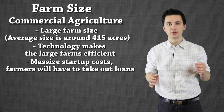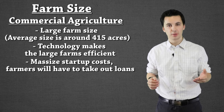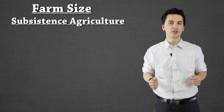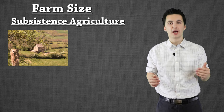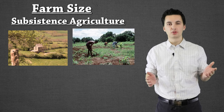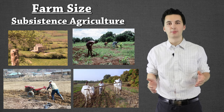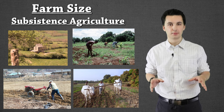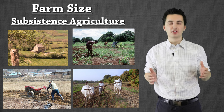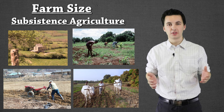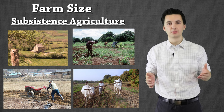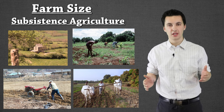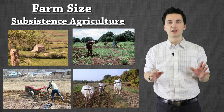Because of this efficiency, even though only a small percentage of the population participates in agriculture, they're able to produce enough food to feed essentially everyone. Subsistence farms, on the other hand, are quite small — averaging around 2.5 acres — and everything is done by hand or with animals. These farms are often passed down through generations. The smaller size is due to lack of machines, money, and cultural land-division practices where land gets divided among children over time.